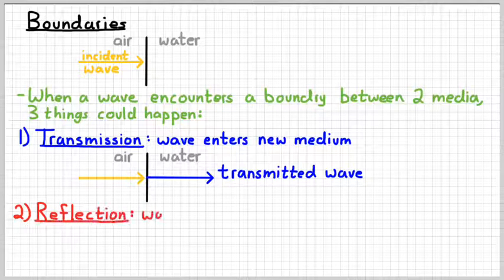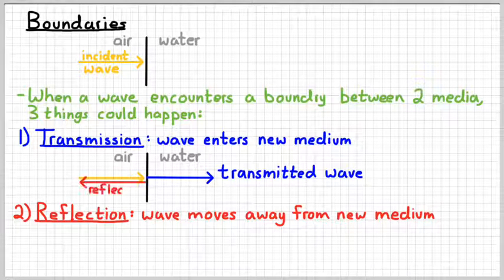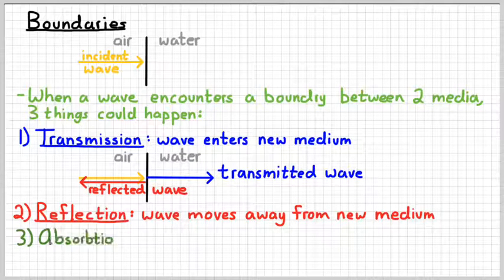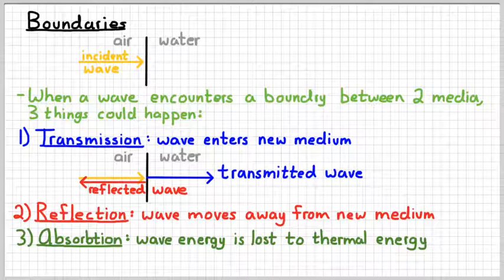The second possibility is that the wave could be reflected — that means the wave is going to move away from the new medium and stay in the original medium. So a reflected wave would look something like that: the incident wave moves towards the right towards the water, and the reflected wave moves to the left away from the water. The third possibility is that the wave could be absorbed, meaning the energy used to create the wave is going to be lost to thermal energy. This causes the wave to be destroyed, or at least smaller in amplitude, and causes the medium to heat up.